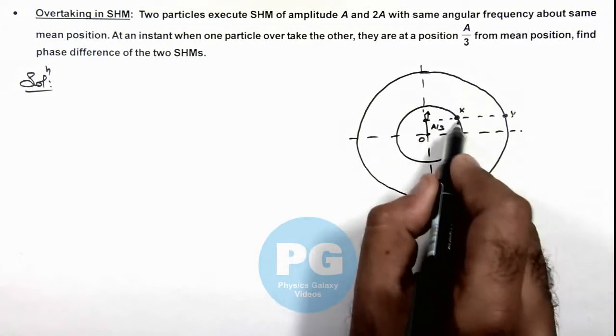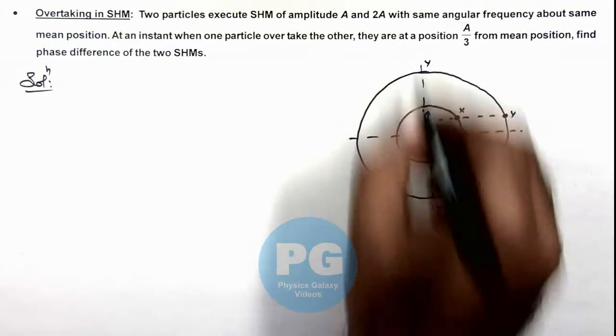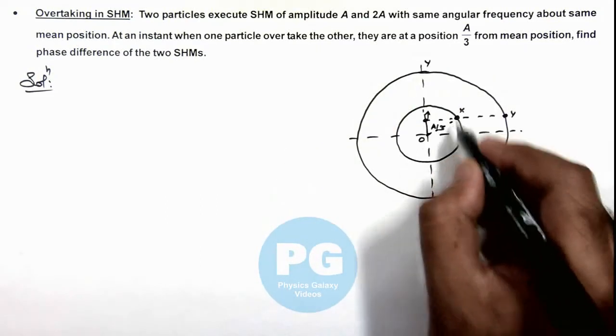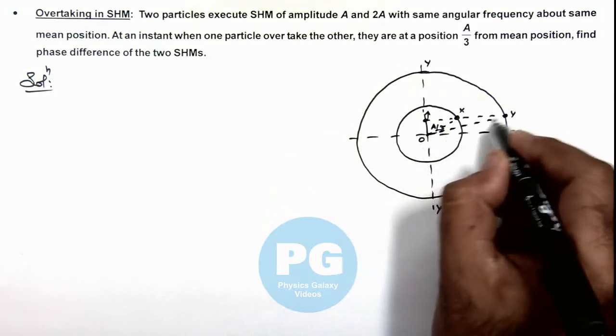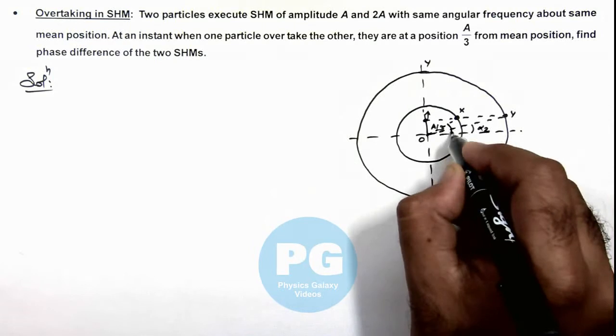And Y would be overtaking X. If we talk about their SHMs on projection on X-axis, YY'. So in this situation for this X and for this Y, we can consider their phase angles are alpha 2 and alpha 1.